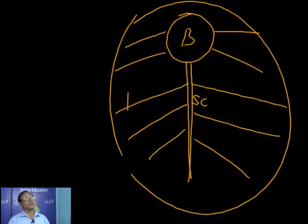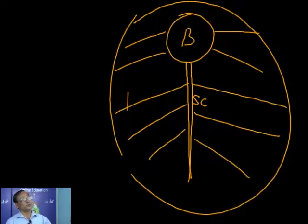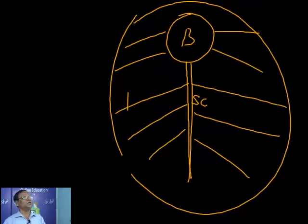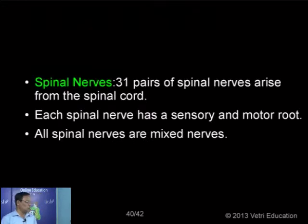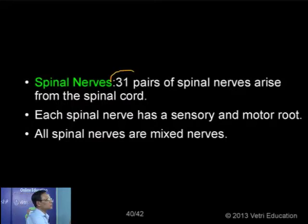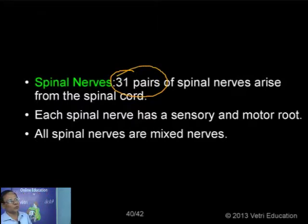There are 31 pairs of spinal nerves in humans. In the case of a frog, there are 10 pairs of cranial nerves and 10 pairs of spinal nerves, but in the case of human beings we have 12 pairs of cranial nerves and 31 pairs of spinal nerves — they together constitute the peripheral nervous system. The cranial nerves are either sensory, motor, or mixed type. Whereas all 31 pairs of spinal nerves are only mixed nerves — carrying both sensory and motor information through the dorsal root and ventral root.